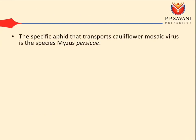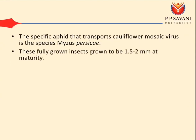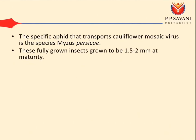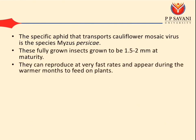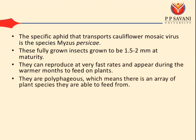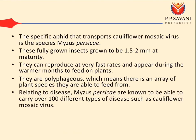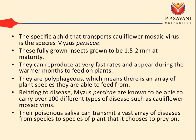The specific aphid that transports Cauliflower Mosaic Virus is the species Myzus persicae. This fully grown insect measures 1.5 to 2 mm at maturity. They reproduce at very fast rates and appear during warmer months to feed on plants. They are polyphagous, meaning they can feed on an array of plant species. Myzus persicae are known to carry over 100 different types of disease, including Cauliflower Mosaic Virus, and their saliva can transmit disease from species to species.